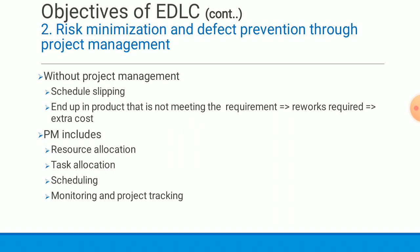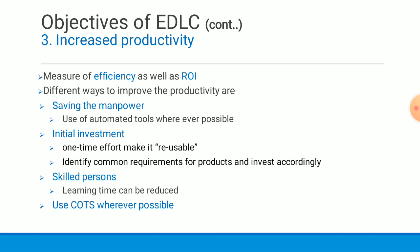The third objective of EDLC is increased productivity. Productivity is a measure of efficiency as well as return on investment. Ways to improve productivity include: saving manpower effort through automated tools wherever possible; initial investment in tools which may be an additional burden but saves effort in future projects as a one-time investment; and reusable effort, where common features from current development can be reused in later projects.